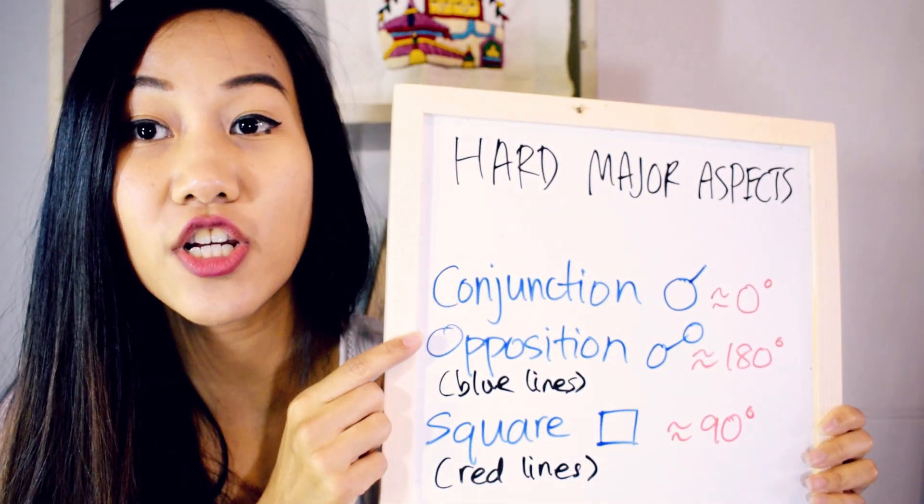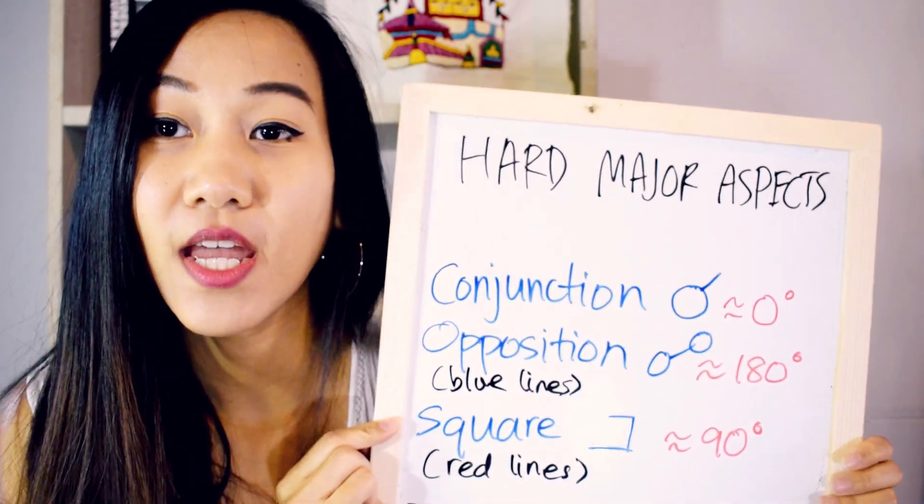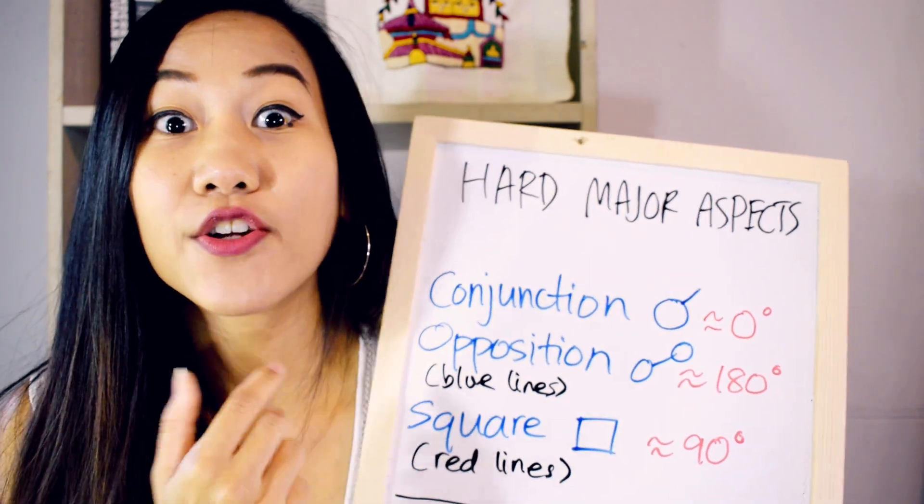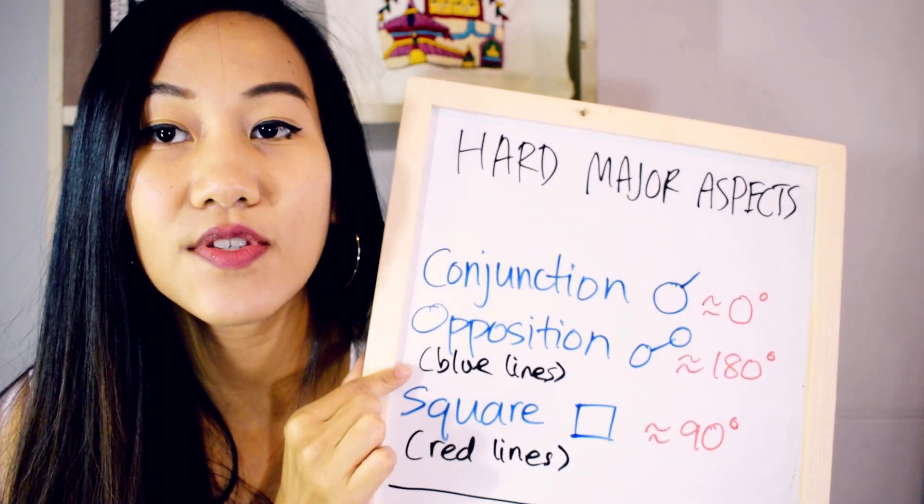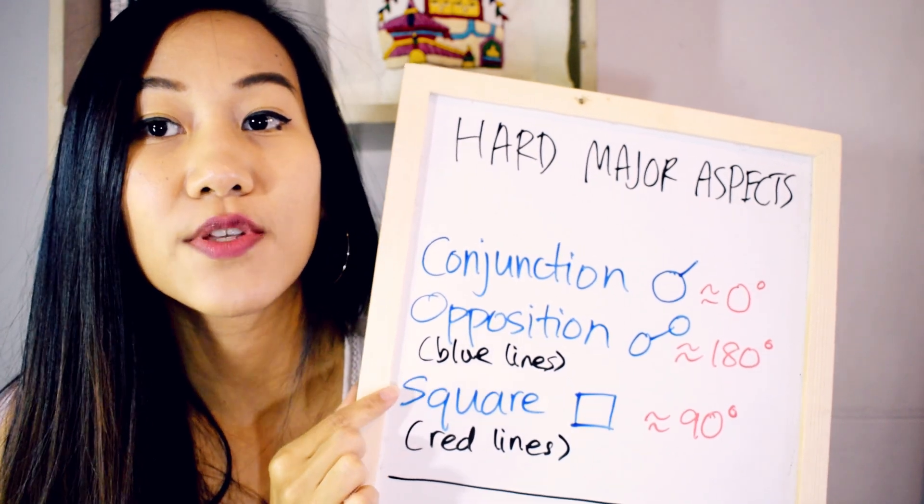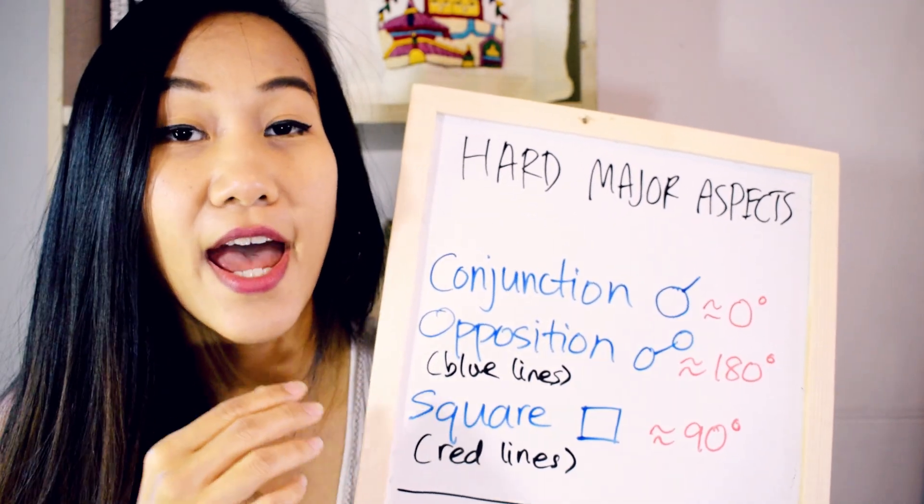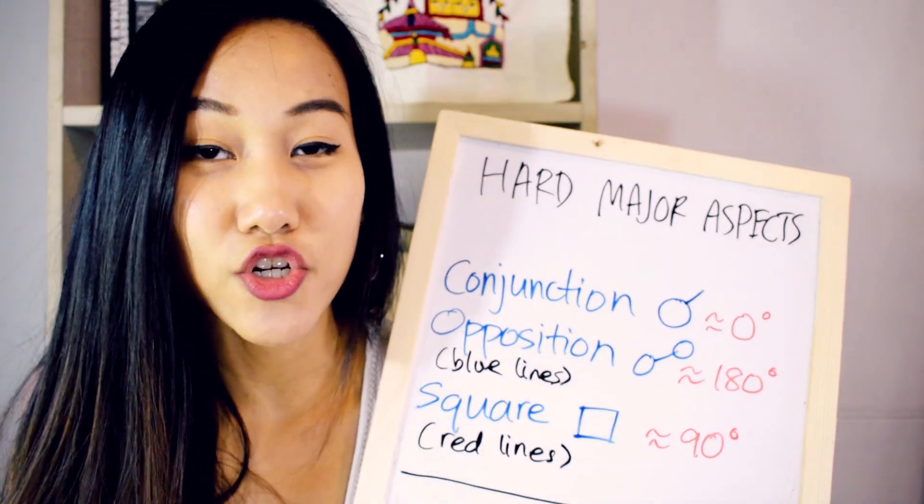So we're going to be looking at the three hard major aspects today: the conjunction, opposition, and the square. If you have a look at your natal chart, the oppositions will be lines that are blue, the square will be red lines, and if you're not sure where to go for your natal chart, it's astrocharts.com. I'll provide the links below.